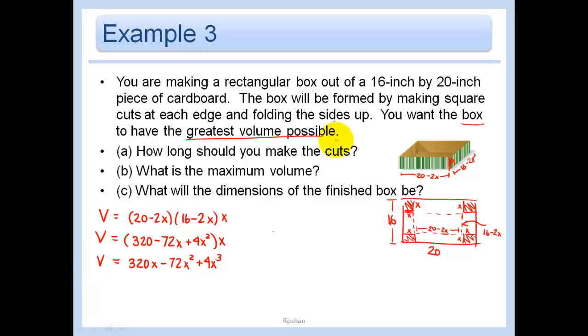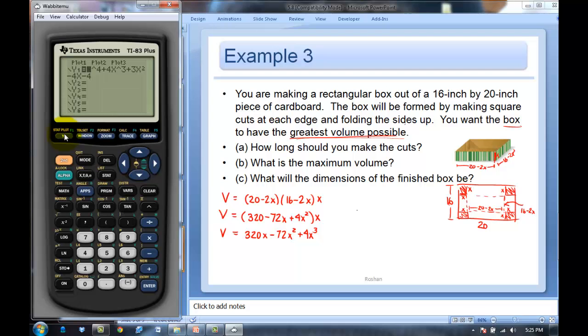Again, your goal is to maximize this. So I want to find the maximum of this. So I have to go back to my calculator. And now I'm going to go in y equals. And I'm just going to type in. Let me clear this out. So we're going to put in 320x minus 72x squared plus 4x cubed. And let's graph that.